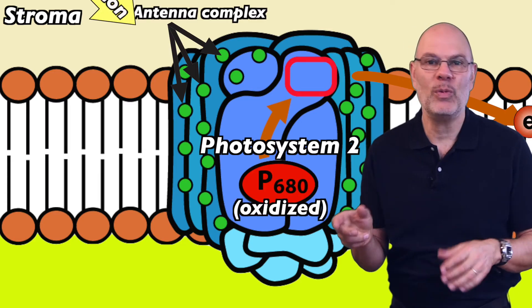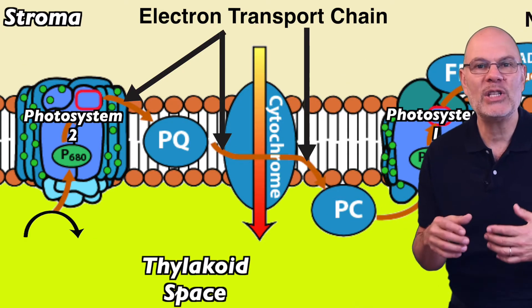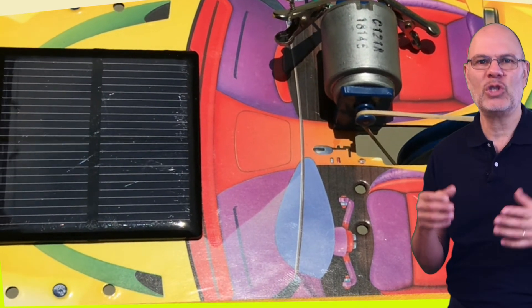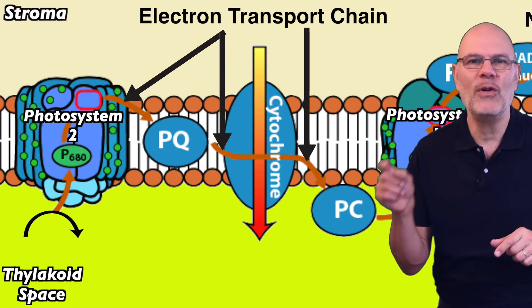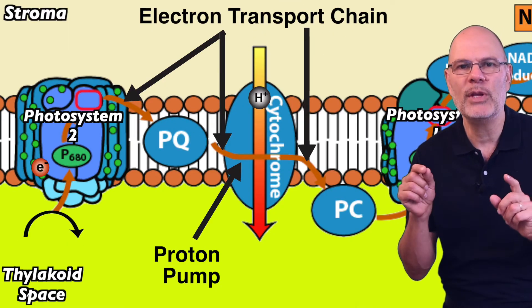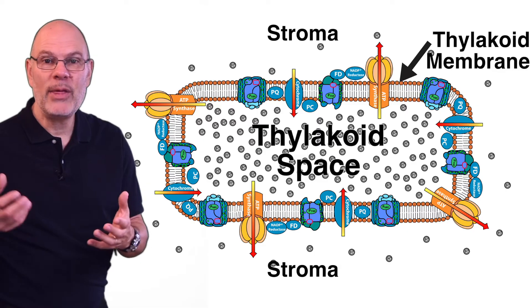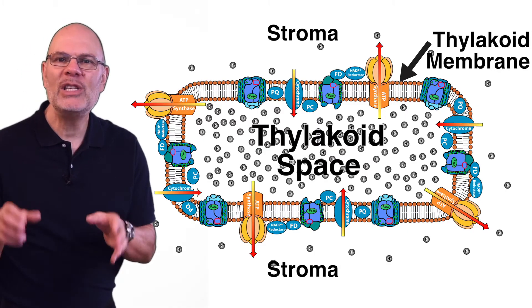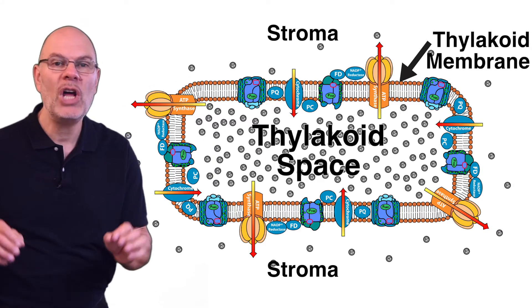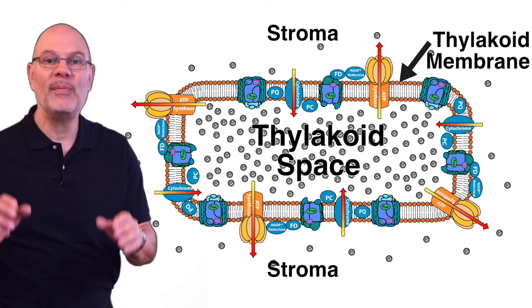The boosted electron flows along photosystem 2's electron transport chain. This flow makes up an electrical current powered by solar energy. In photosystem 2, the electricity powers tiny proton pumps that pump protons from the stroma to the thylakoid space. The thylakoid space is surrounded by the thylakoid membrane. The membrane's phospholipid bilayer is not permeable to protons, making it a closed compartment. All of these protons packed into that closed compartment represent a form of potential energy.